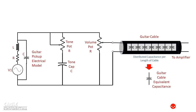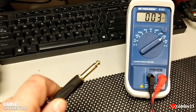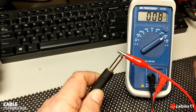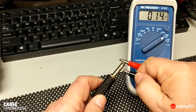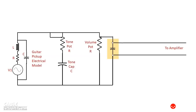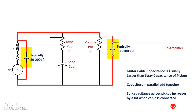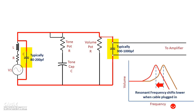The plugs at each end will also contribute a little capacitance as well. Let's measure a typical 20 foot guitar cable here to get a real world number, and you can see that this cable has about 850 pF of capacitance. We've replaced the picture of the cable with a capacitor symbol across the output jack of the guitar. As you can see, the cable capacitance adds to the stray capacitance across the pickup, and capacitors in parallel add together. This additional capacitance causes the resonant peak to shift to a lower frequency, which will change the overall tone.